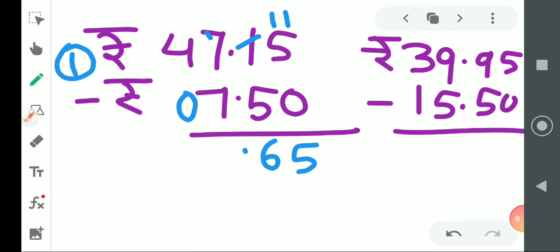Point stays in the same place. This 7, when we carry, becomes 6. 6 minus 7, we will carry this to make it 11, giving us ₹39.65. Come to example number 2.